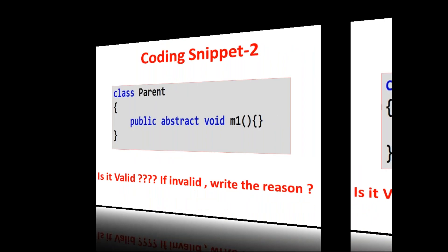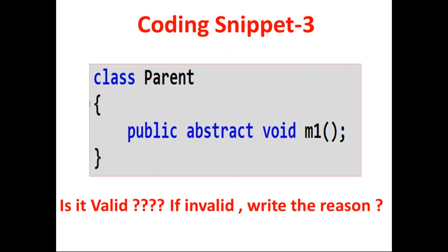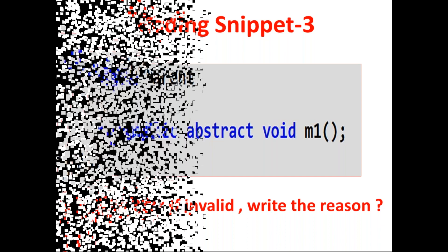Now the third: class Parent, public abstract void m1, semicolon. Is it valid or not? Do you know? If I try to compile this, what is the response from the compiler? Can you please trace that response so that you will get how compiler and JVM internally think. You should be in the position to answer. Is it valid or not? If it is invalid, can you please write the reason?